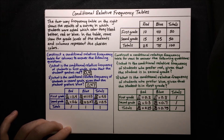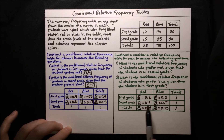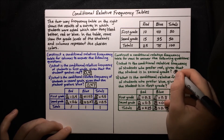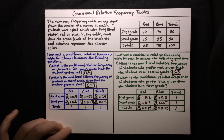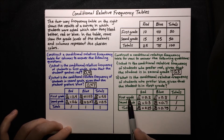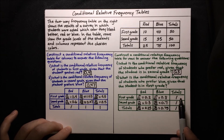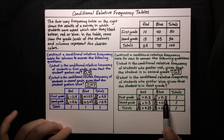Now that we've got our table, we can look at the questions again. First, what is the conditional relative frequency of students who prefer red, given that a student is in second grade? We're asking out of all students in the second grade row, what's the portion who prefer red? From our table, that's 0.3. For the second question, the conditional relative frequency of students who prefer blue given that the student is in first grade: out of all first grade students, what's the portion who prefer blue? That's right here in the blue column — 0.8.